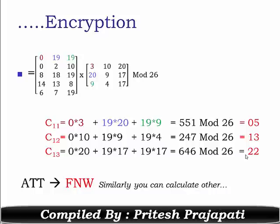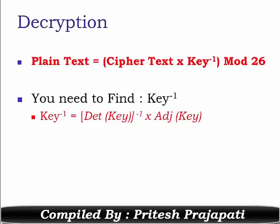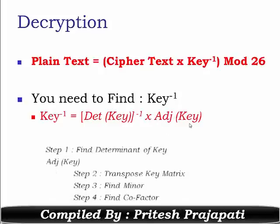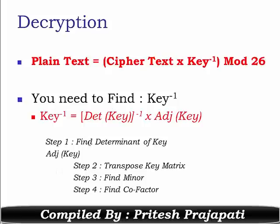Now for decryption, you have the equation: plaintext equals ciphertext into key inverse mod 26. The first step is to find the key inverse using the formula: determinant of key inverse into adjoint of key. Step one is to find the determinant of the key.